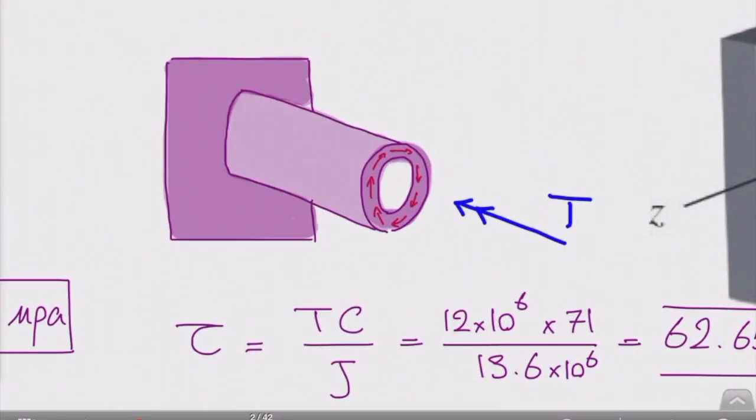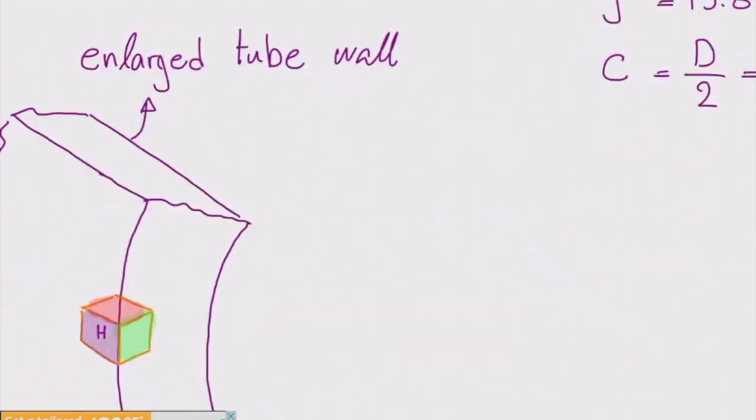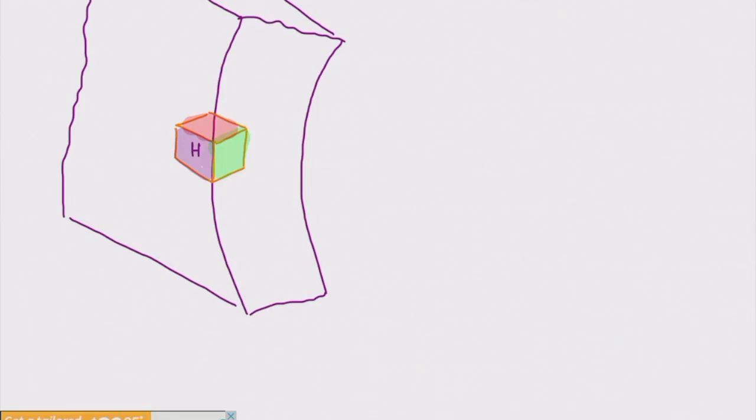Look at this tube. This is the cross section of this tube, and that cross section is subjected to shear stress. So if I get back to this, that would be the wall, and that green surface is subjected to shear stress.